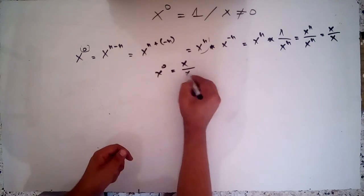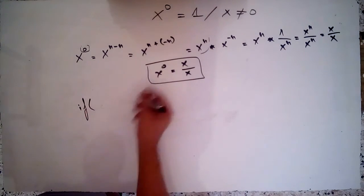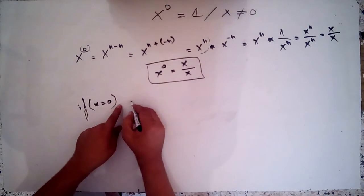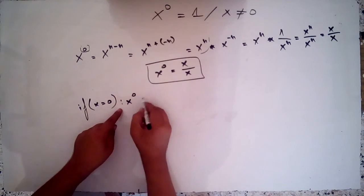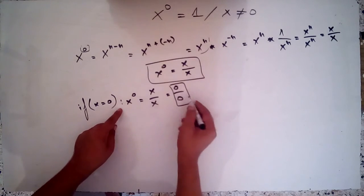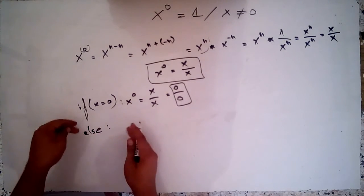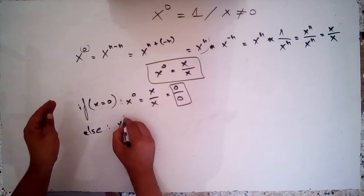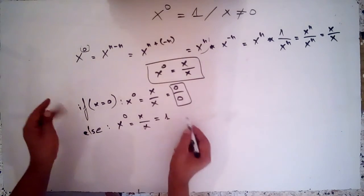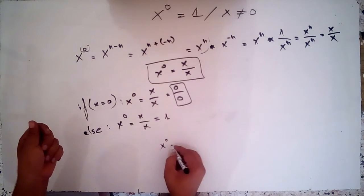So x power 0 equals x over x. Now if x is equal to 0, then x power 0 equals 0 over 0, and that is undefined. But if x is different of 0, then x over x is equal to 1. So we can write x power 0 is equal to 1 for each x different of 0.